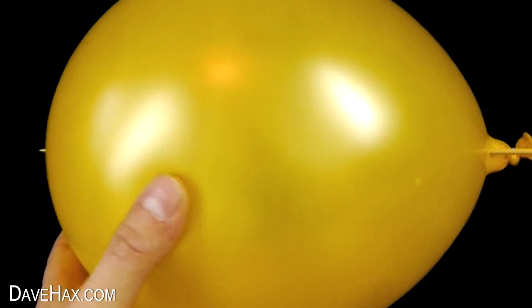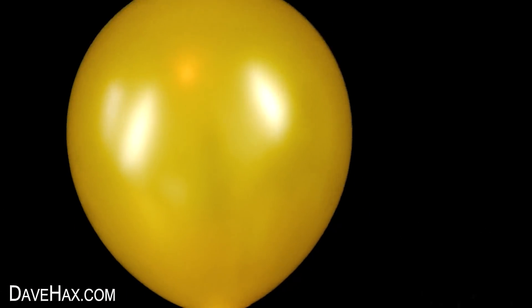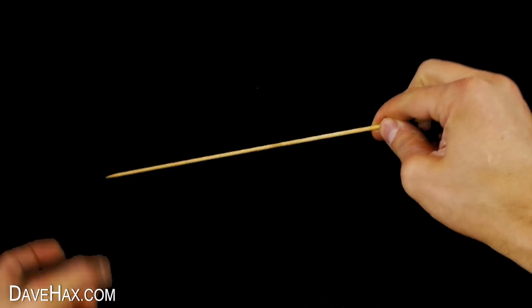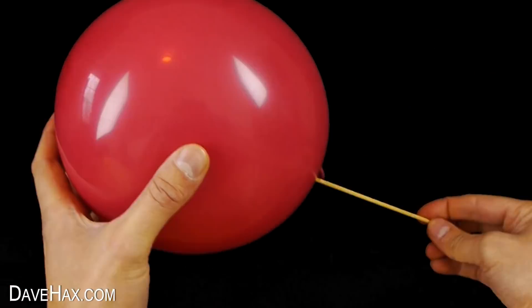Then line it up with a thick part at the top and carefully push it on through. And there we have it, a balloon threaded onto a skewer. Pretty cool, huh? And when you're done, you can pull the skewer out and pop the balloon. It's a great trick to do and it looks really impressive.